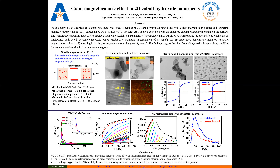Here we have the magnetocaloric properties of the cobalt hydroxide nanosheets. The as-synthesized sample has less change in entropy as opposed to the exfoliated sample, which again shows a greater magnitude of entropy change compared to the as-synthesized sample.